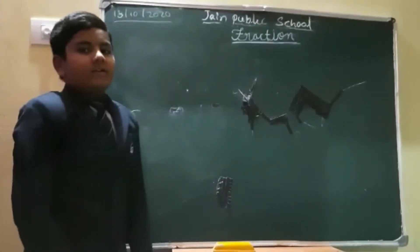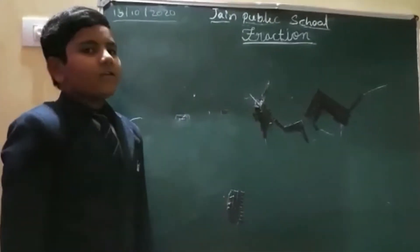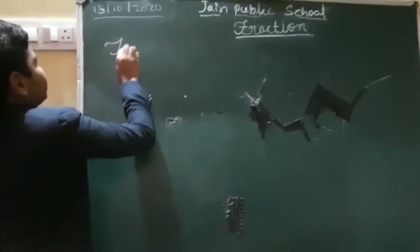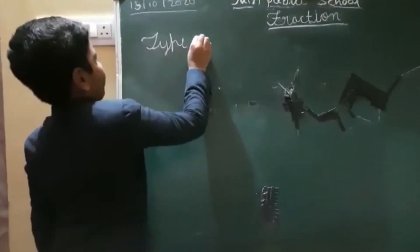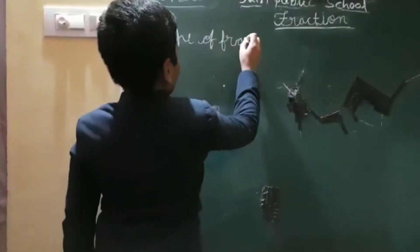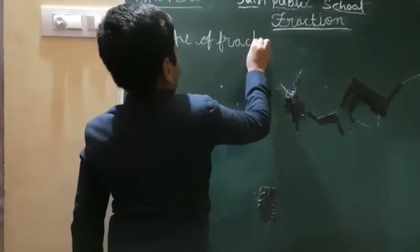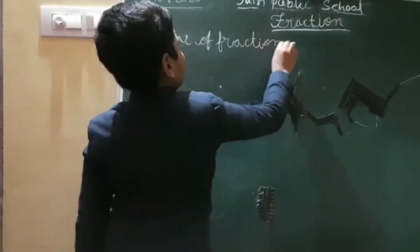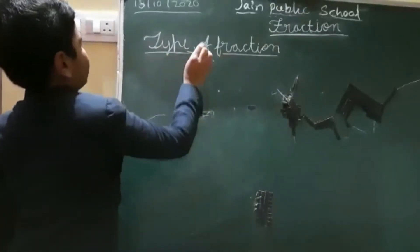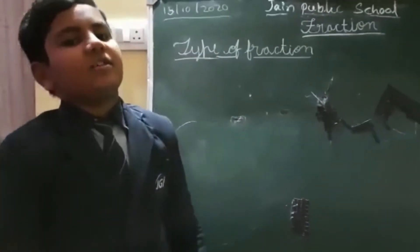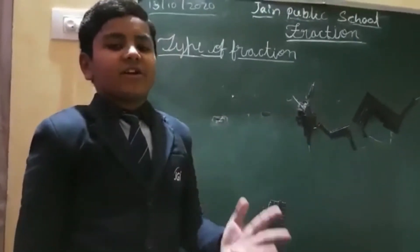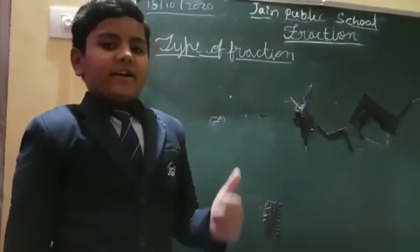Next one is types of fraction. There are six types of fractions. They are proper fraction, improper fraction, unit fraction, like fraction, unlike fraction, and mixed fraction.